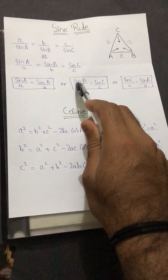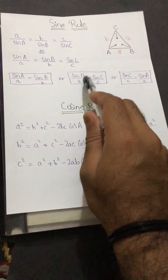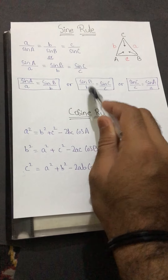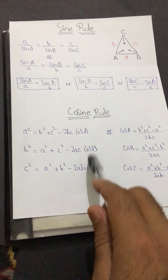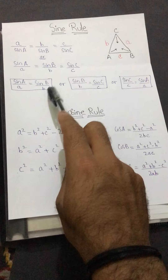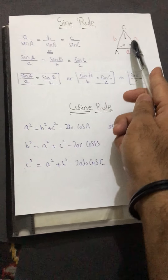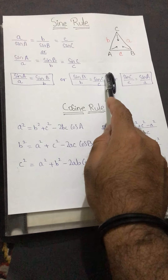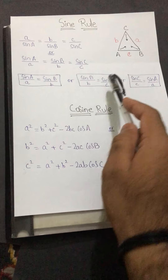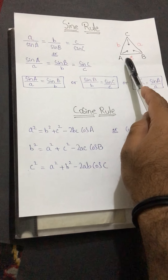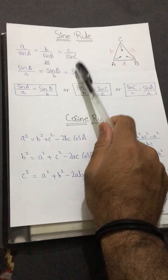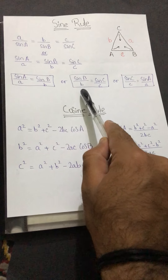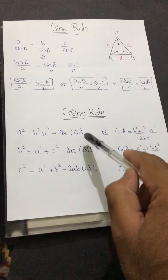Remember, these formulas can be used to find both missing angles and missing lengths depending on your data. The limitation of sine rule is that at least two angles must be given. If only one angle is given, you cannot use sine rule — you use cosine rule instead. If two angles of a triangle are given, you can find the third by subtracting their sum from 180°, since the interior angles of a triangle always sum to 180°.